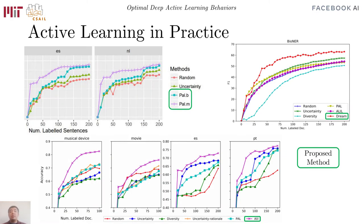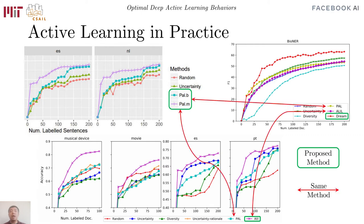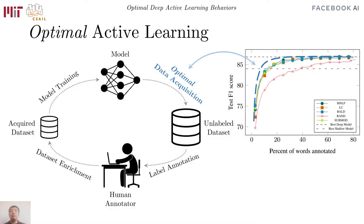Evaluations of recent methods seem to suggest that we live in a time of great progress, as every new method achieves significant improvement. But a closer look reveals alarming inconsistency — one method could be the state-of-the-art on one problem, but even struggles to outperform the random baseline on another. This makes real-world deployment risky, as there's no turning back once the labeling cost is incurred. It's hard to understand the deficiency of a particular strategy without a comparison to the optimal oracle.